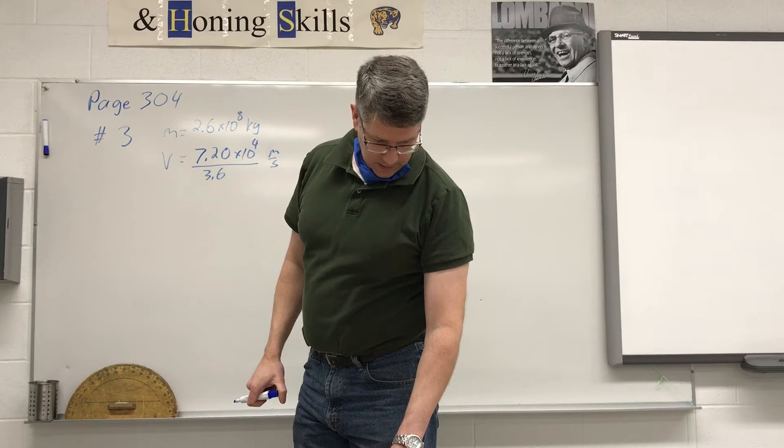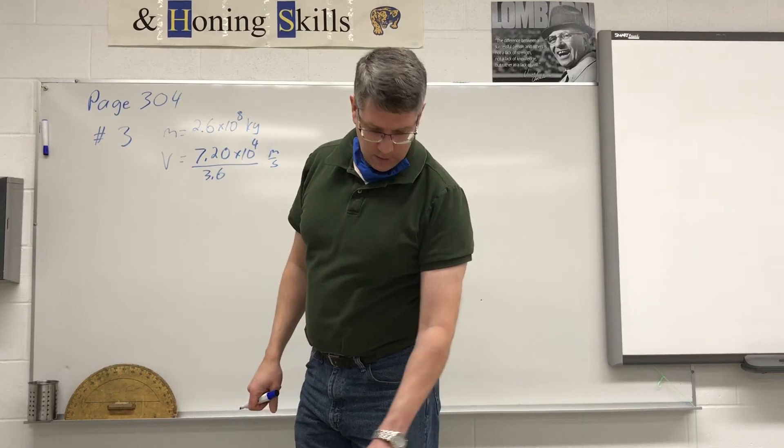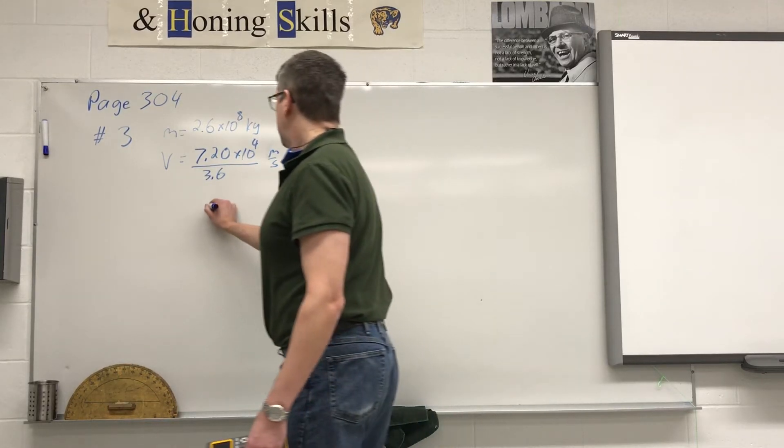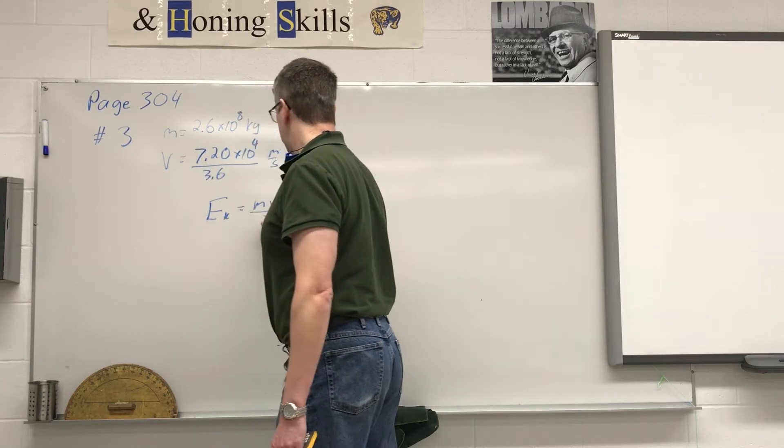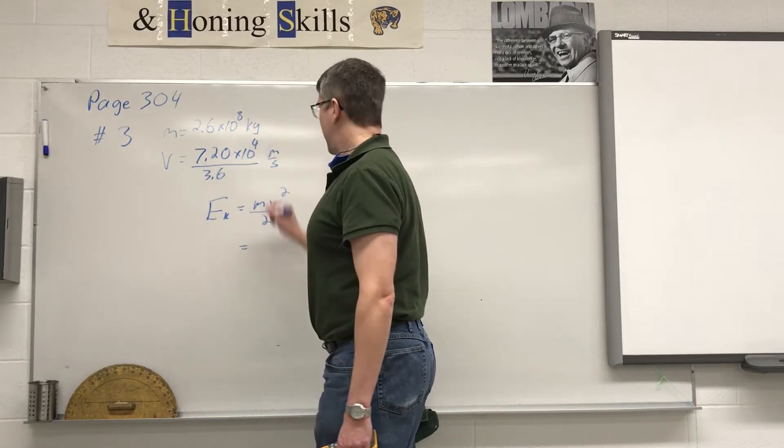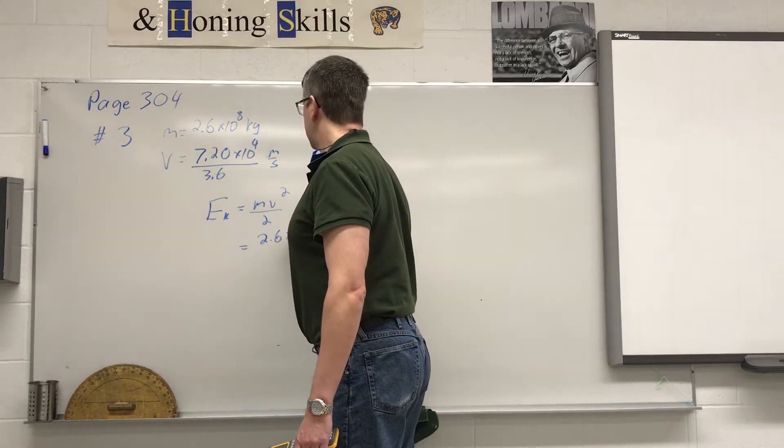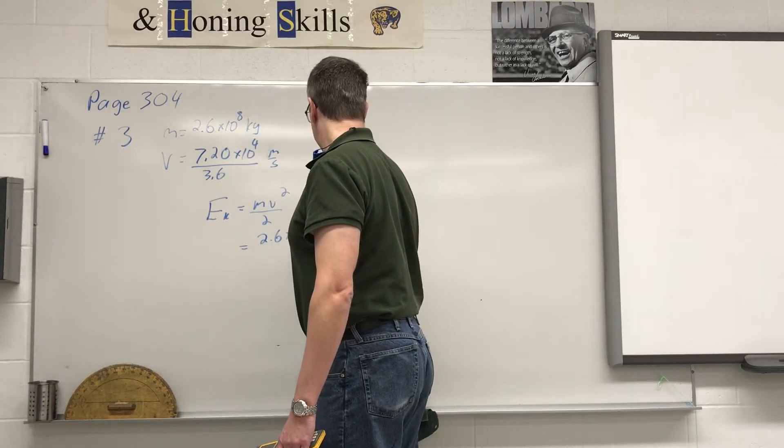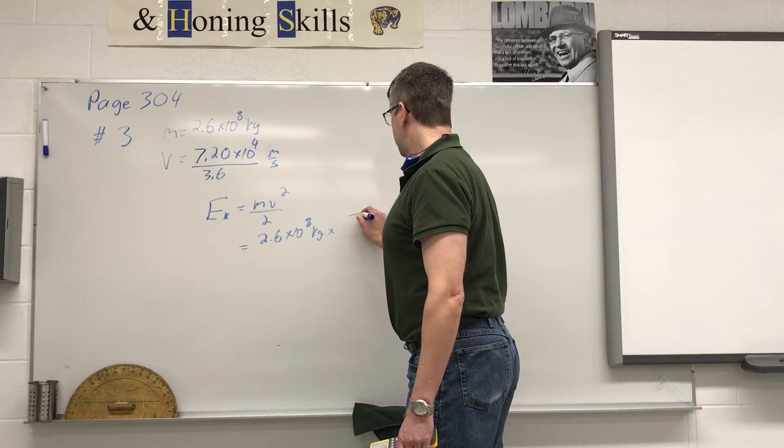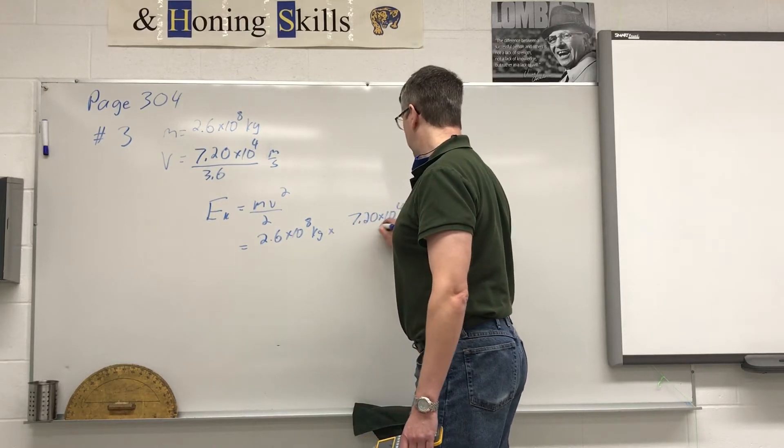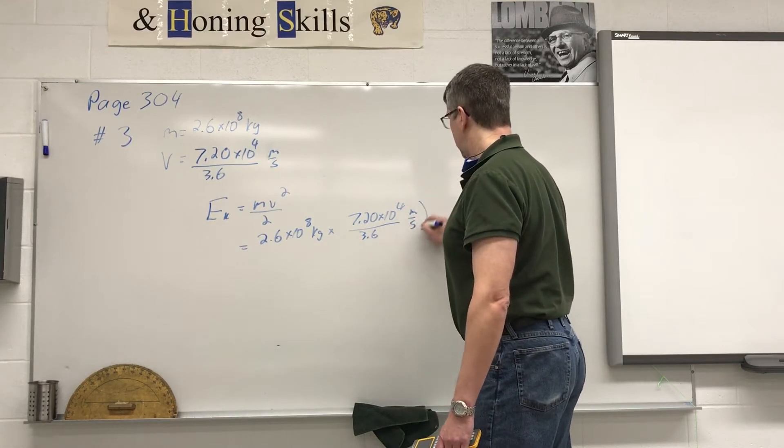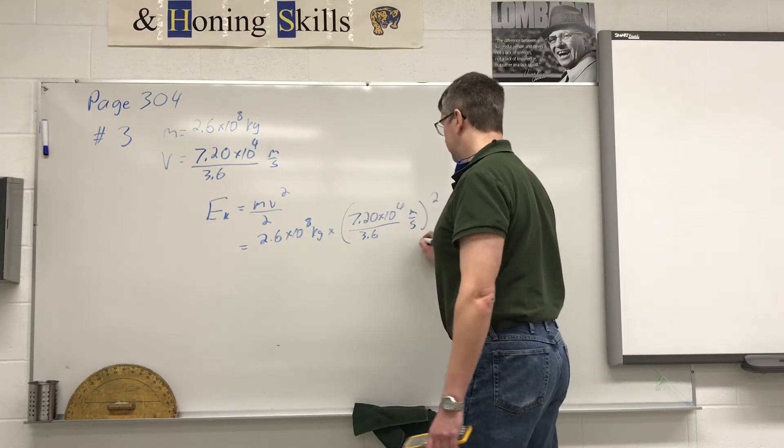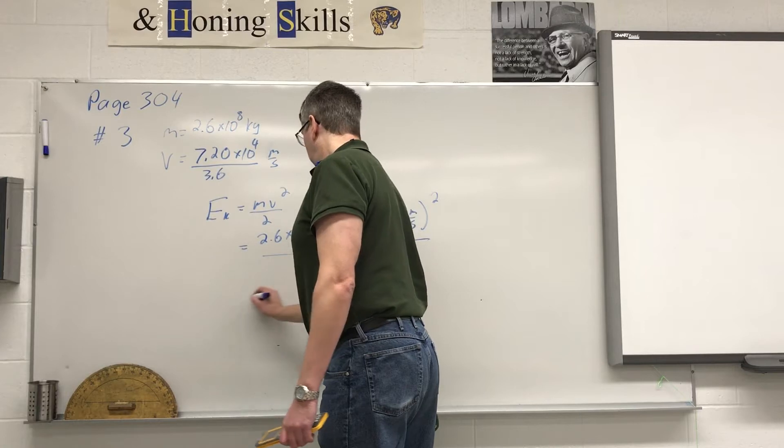Part A. What was the kinetic energy of the meteor at the instant of impact? So kinetic energy is mass times velocity squared divided by 2, so our mass is 2.6 times 10 to the power of 8 kilograms multiplied by our velocity 7.20 times 10 to the power of 4 divided by 3.6, that's in meters per second which we have to square, divided by 2.